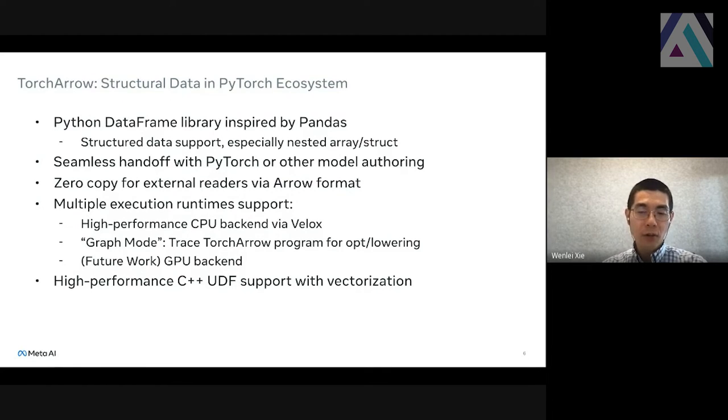We also implemented graph mode. The idea is we try to trace the TorchArrow program into some standard relational IR, which allows us for optimization and lowering to other distributed engines that are very scalable. This part is not open source yet, but we are also exploring how we can engage this with the community. And finally, as future work, we also want to have a GPU backend because a lot of preprocessing becomes very efficient on a GPU machine. And we also make it very extensible with the Velox UDF mechanism, which is high-efficient and supports vectorization.